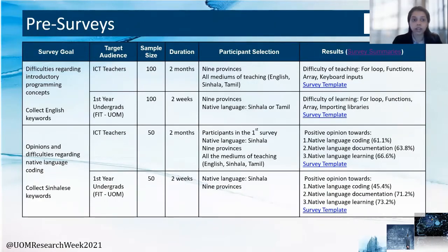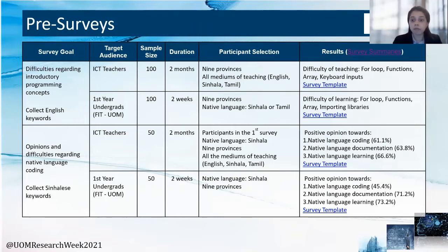For the design of our language we conducted several pre-surveys. The first survey's goal was to identify the difficulties regarding introductory programming concepts and to collect relevant English keywords. The second was to collect opinions regarding native language coding and to collect native-language-based keywords. Both surveys targeted two different audience groups: ICT teachers and personal enterprise participants who simulated the behavior of novices. From these surveys we gathered finalized English keywords and identified that loops, functions, barriers, keyboard inputs and library inputs were the concepts requiring the most attention during the design phase. A positive opinion was also gathered toward native language coding, documentation and learning from both groups.